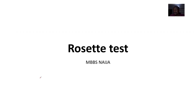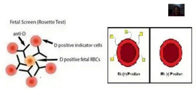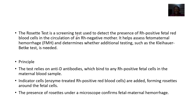We spoke about fetal-maternal hemorrhage and some possible tests that could be done to detect this. Let's look at a test in depth: the Rosette test. This is a fetal screening Rosette test — a screening test used to detect the presence of Rhesus-positive fetal red blood cells in the circulation of a Rhesus-negative mother.